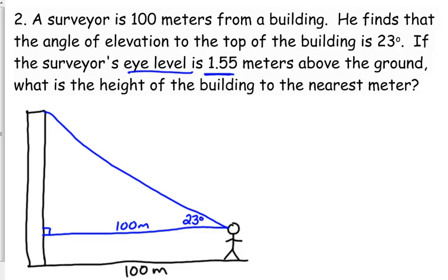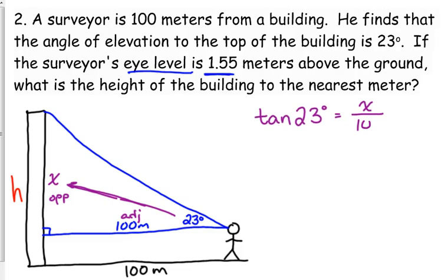We want to know the height of the building, but notice the height of the building is more than that side right there. So I'm going to label that with a different variable because that's not our ultimate answer here. So with the information we're given, what I labeled as x would be the opposite. The 100 would be the adjacent. So that means which trig function are we using? Tangent. This time we're given the angle. We're looking for one of the sides. This is the easier scenario.